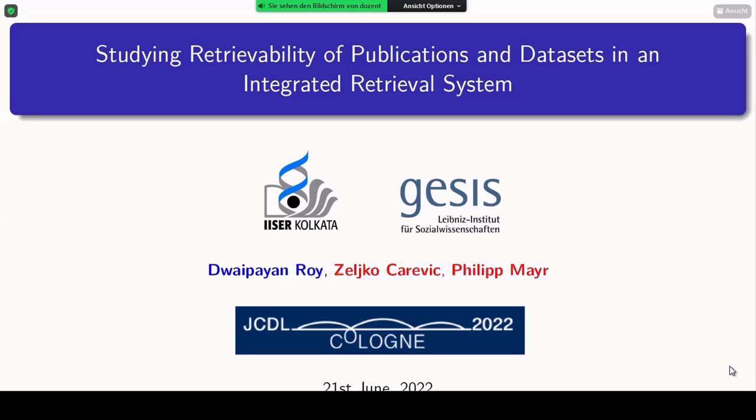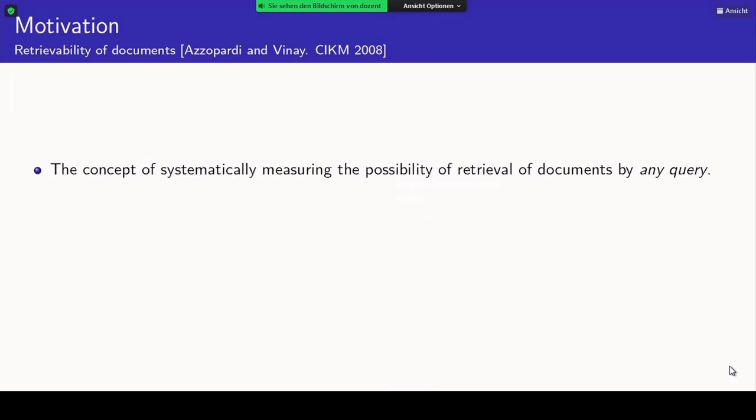The work is about how retrievable items are from different categories if we consider an integrated search system. The first question obviously is: what is retrievability? It is basically the concept of measuring how frequently a document will be retrieved by any of the queries during its lifetime.